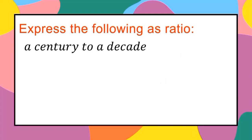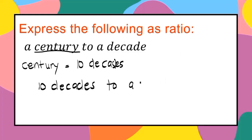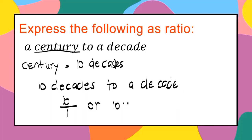Another example: a century to a decade. The bigger unit is a century. In one century there are 10 decades. So this can be translated as a ratio: 10 is to 1, or 10 over 1.